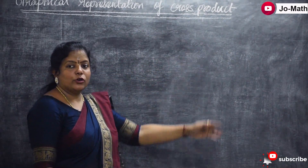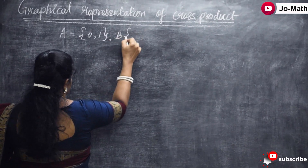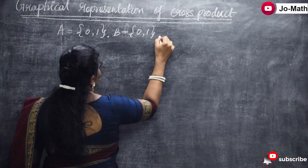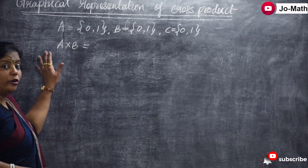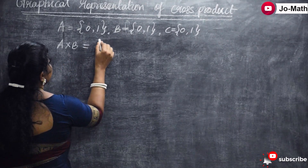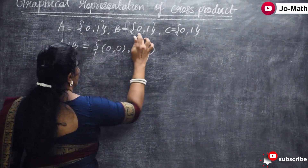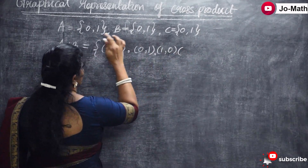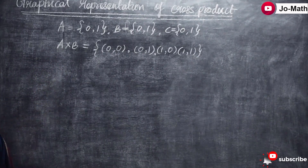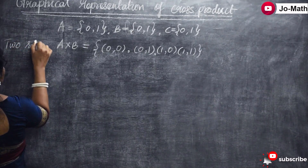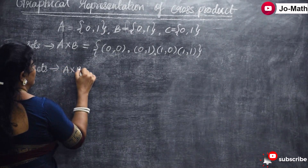Now let us see the graphical representation of the cross product. If we take set A as {0, 1}, set B as {0, 1}, then A cross B gives the ordered pairs: (0,0), (0,1), (1,0), (1,1). This is the Cartesian product of two sets. Next, we have three sets: A cross B cross C.